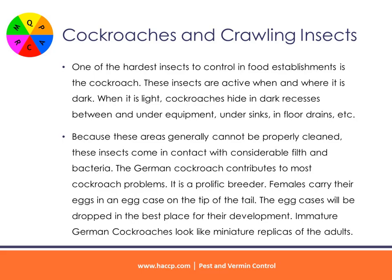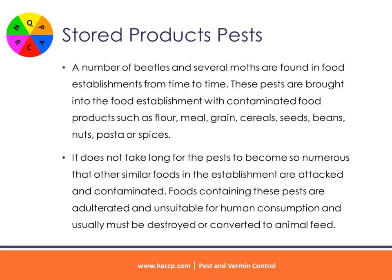The German cockroach contributes to most cockroach problems. It is a prolific breeder. Females carry their eggs in an egg case on the tip of the tail. The egg cases will be dropped in the best place for their development. Immature German cockroaches look like miniature replicas of the adults.